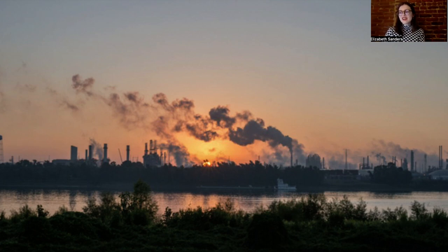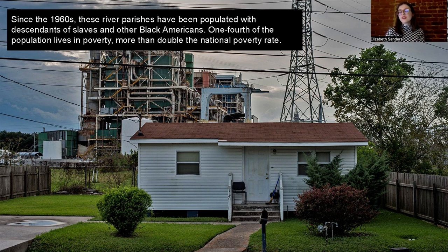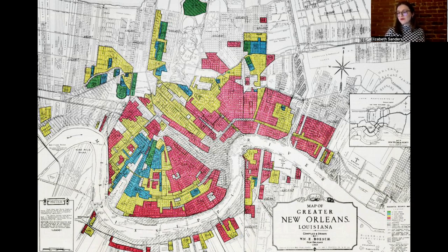Hundreds of chemical plants and oil refineries are located along the river. Since the 1960s, these river parishes have been inhabited by Black Americans — one-fourth of the population lives in poverty, more than double the national poverty rate. An industrial structure looms behind small houses. This map of greater New Orleans shows redlining: the federal government ranked neighborhoods as good or bad risks for housing loans. Black neighborhoods were marked in red, preventing investment and home ownership. This practice caused generational gaps in wealth, health, and education. Redlining, embodied in these pernicious data graphics, is the heart of systemic racism.